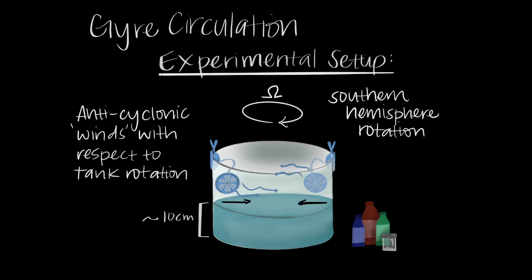The interior circulation is determined by the surface wind forcing. This is characterized by convergence at the surface, downwelling into the interior, divergence at depth, and upwelling along the edges of the tank.